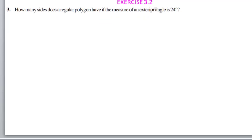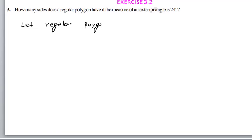Next question: how many sides does a regular polygon have if the measure of each exterior angle is 24 degrees? So here we need to find how many sides. Let the regular polygon have n sides.